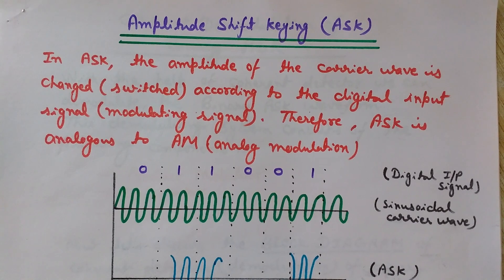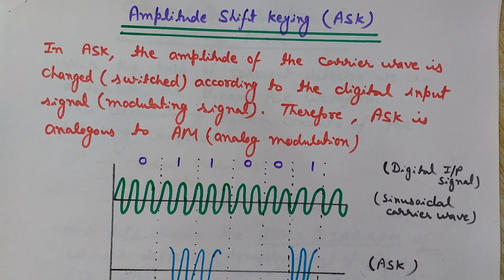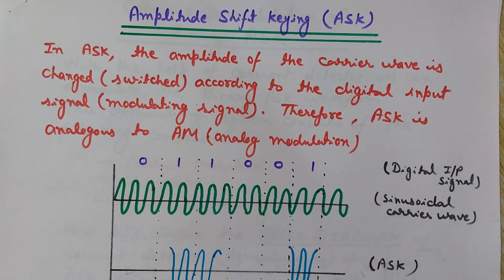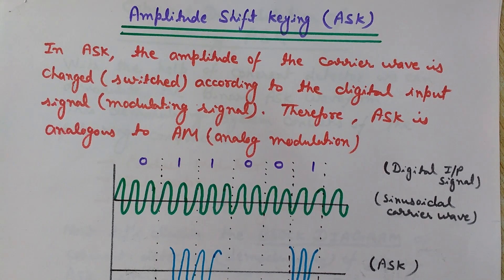Let's understand first what is ASK. In ASK, the amplitude of the carrier wave is switched according to the digital input signal, which is also known as the modulating signal. ASK is analogous to AM, which is a kind of analog modulation. In AM the amplitude of the carrier wave is changed according to the variations in the instantaneous value of the modulating signal. In ASK the modulating signal is digital in binary form, so the difference is only of the modulating signal. The carrier wave is analog in both cases.